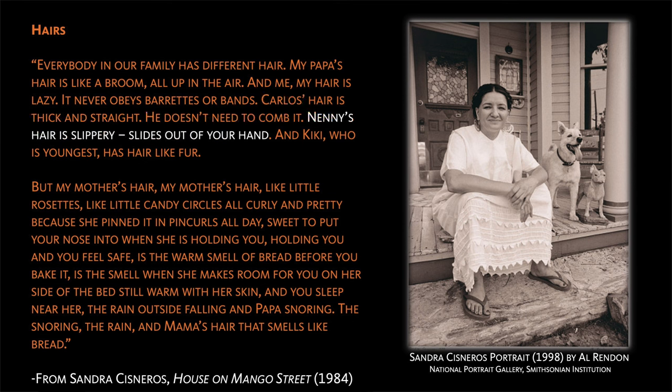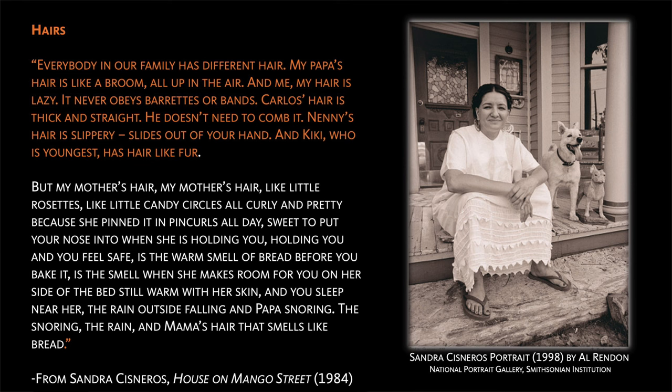This vignette does so much work to characterize the family as a unit and as individuals. Things come to Carlos. Nennie is exasperating. Little Kiki is soft and young. The speaker's hair has a mind of its own — a little lazy, perhaps, a little disobedient. The speaker doesn't seem sure. That makes sense because the overarching movement of the book is around her coming to understand herself. And then there's that beautiful, lush, almost stream-of-consciousness passage about her mother, where the short sentences in the first paragraph break open into something looser. Her mother's hair is like little rosettes, the speaker says — like little candy circles. Sweetness and delight. The center of the family with a paragraph all to herself.